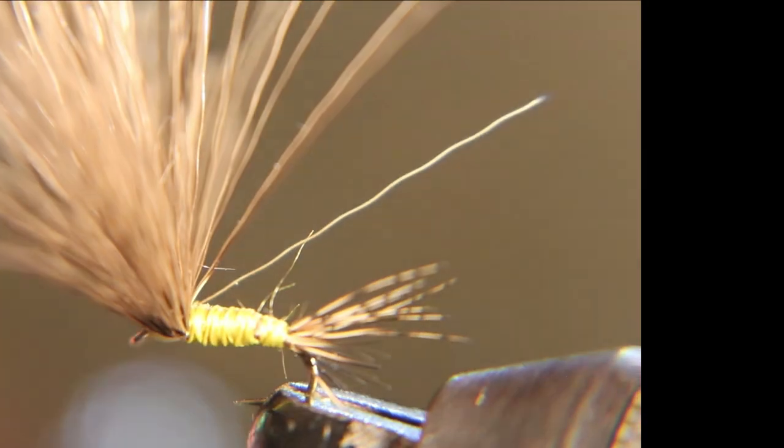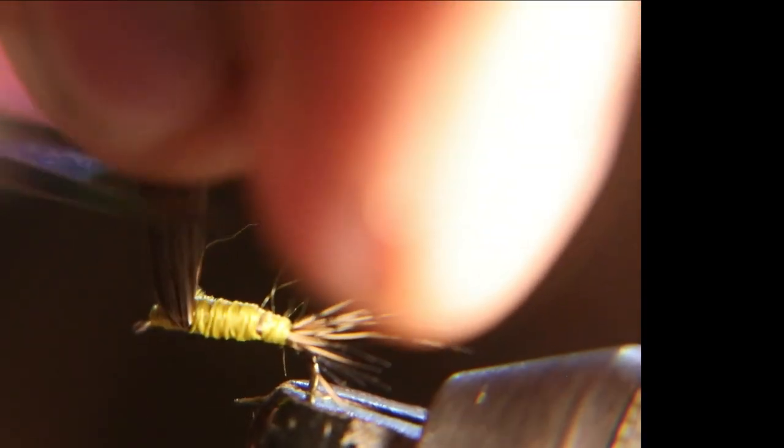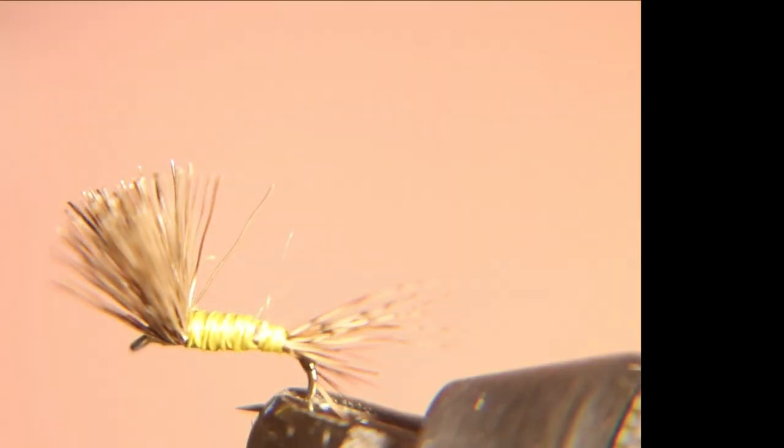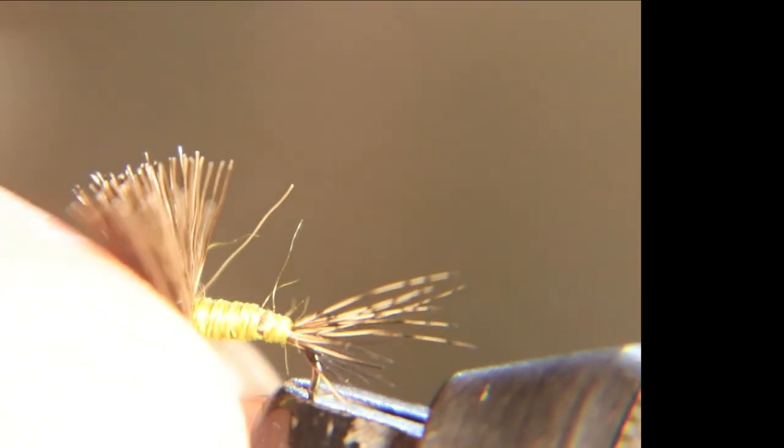I would pull that deer hair straight up and cut it off the same length as the hook shank. So you want to measure it. You can actually take one of your hooks and hold it up beside it and measure it if you wish to. I've been doing it for so long, I kind of know. So let's cut the deer hair to length for a wing.